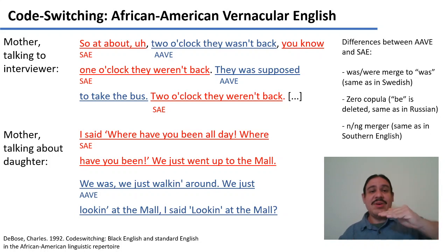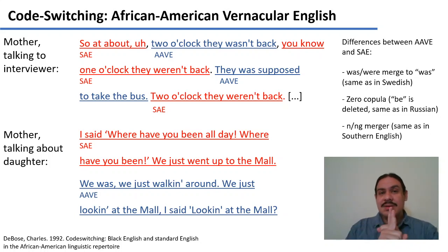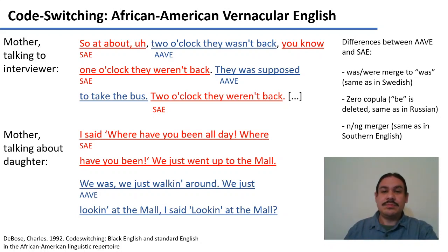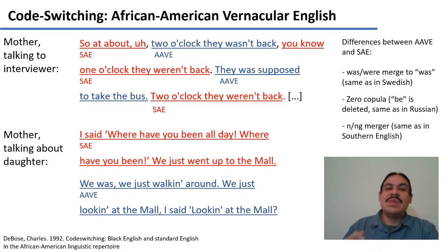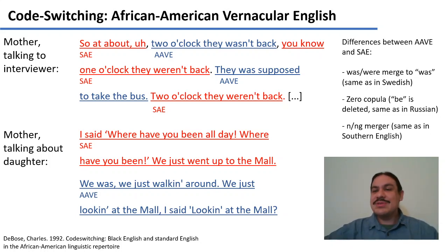This person goes back and forth between Standard American English and African American Vernacular English. You can see it because they have different grammatical markers. For example, the words "was" and "were" in Standard American English have only one form in African American Vernacular English: "was." This is by no means a defect — Swedish verbs work exactly like this, with only one form for the verb. There's also something called zero copula, or deleting the verb "be," as in "we just walking around." Standard American English would have a "be" there, but in African American Vernacular English it disappears. Russian also has zero copulas for its present tense. These are perfectly good languages working in perfectly normal ways.